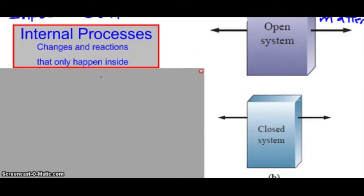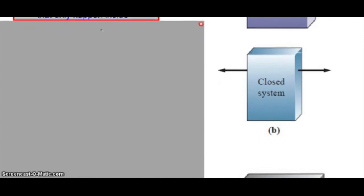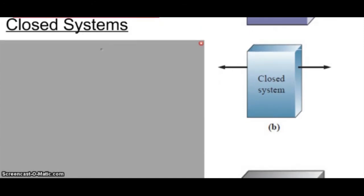Okay, on to the second type of system. Now, you might think a closed system is just the opposite of an open system, where no energy goes in and out, no matter goes in and out, and you're close.